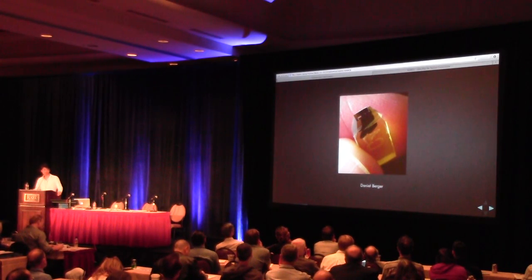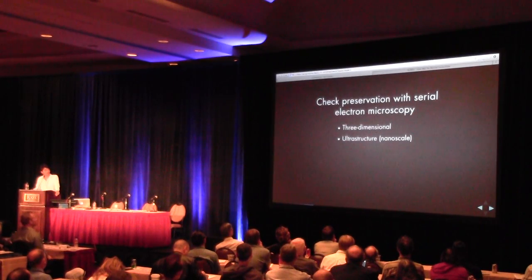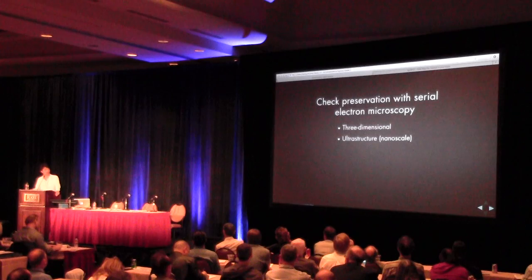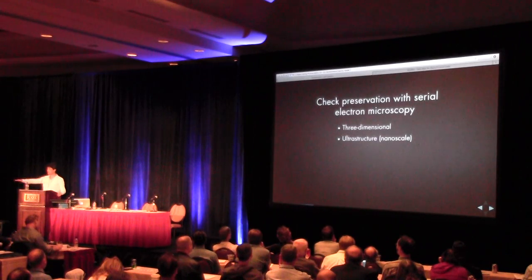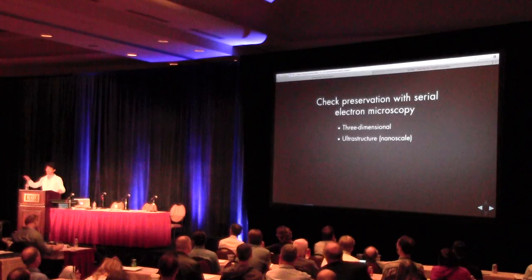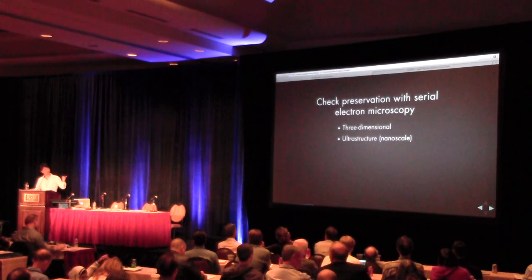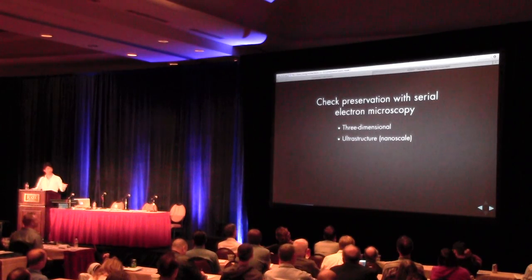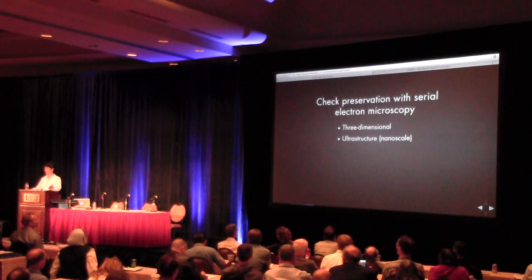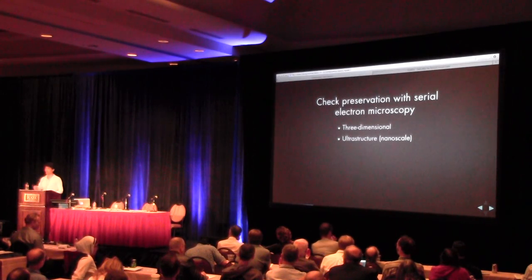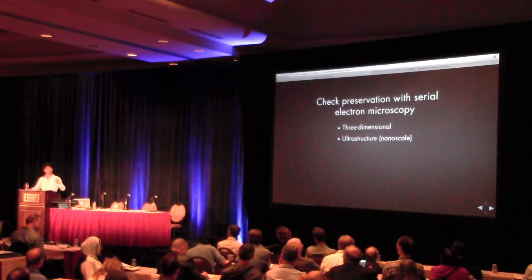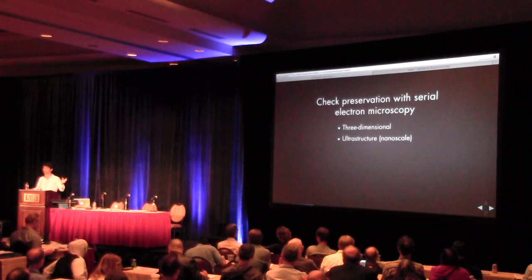There's a method called serial electron microscopy — Ralph actually wrote a nice paper on it in 1989, anticipating a lot of the connectomics work. You can use this technology to see the three-dimensional structure of the brain. Three-dimensional is crucial — the brain is a 3D structure, and a single 2D image can't tell you the full story. The second key thing is ultrastructure — that's neuroscience jargon for nanoscale. We have to look at really high magnification, at the nano scale, to see the real complexity of brain structure.